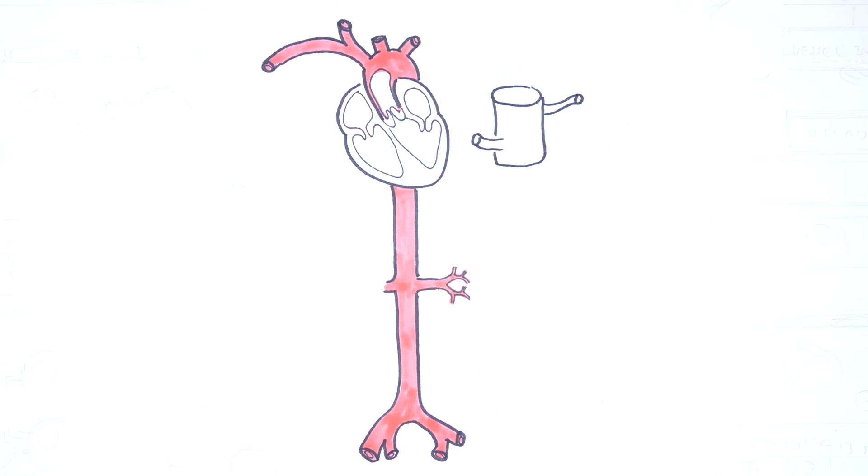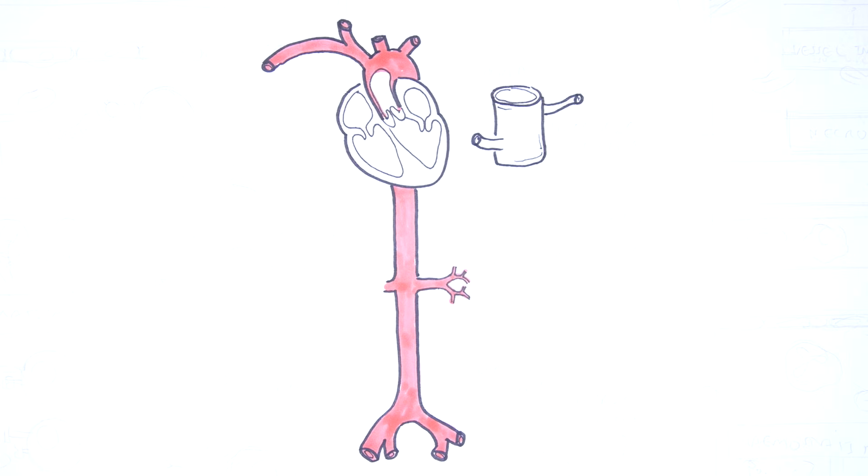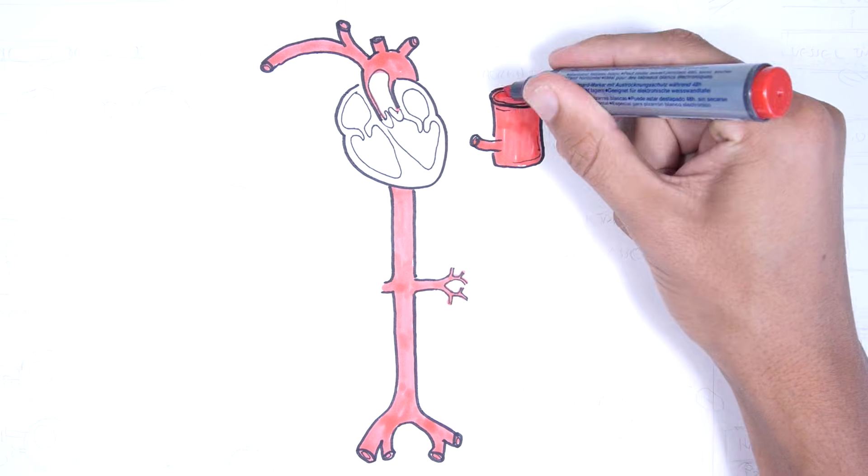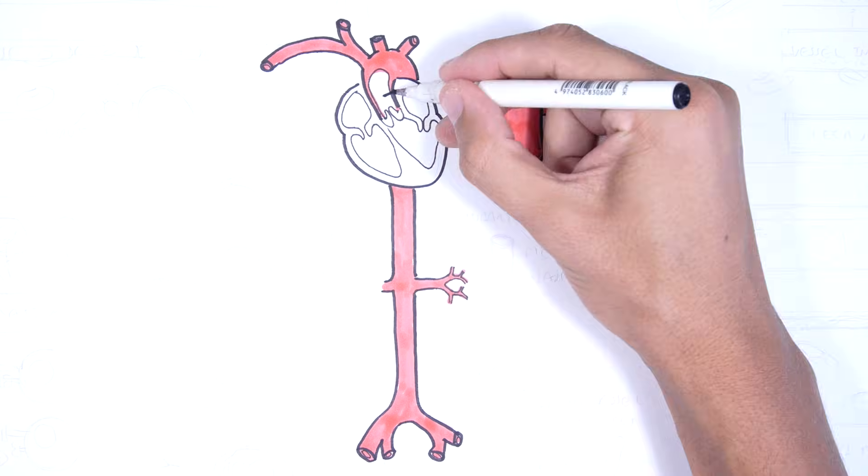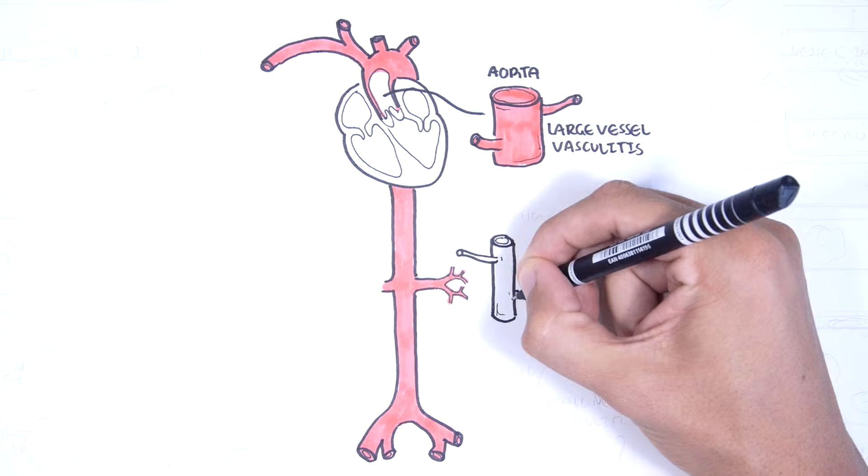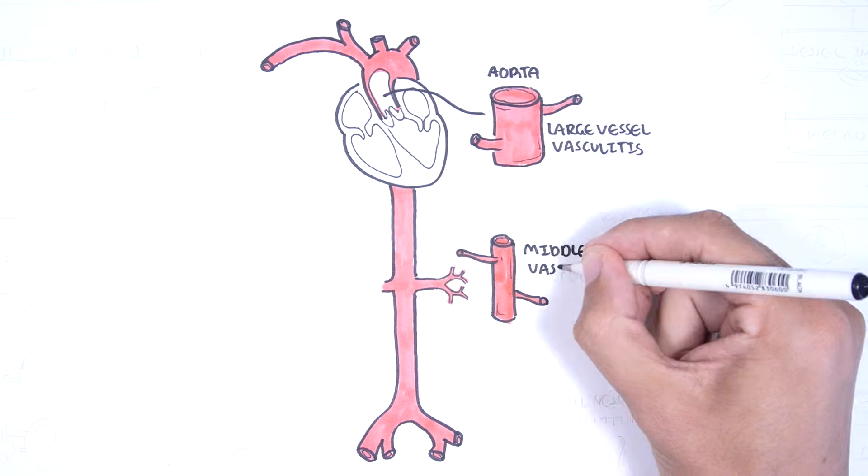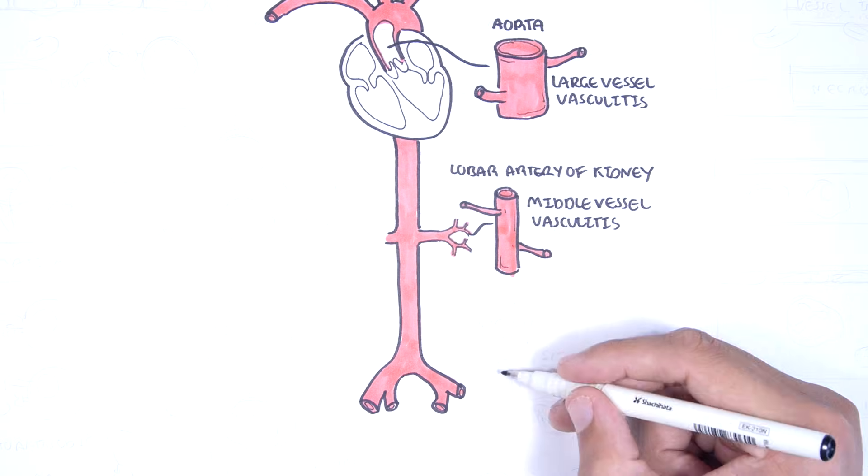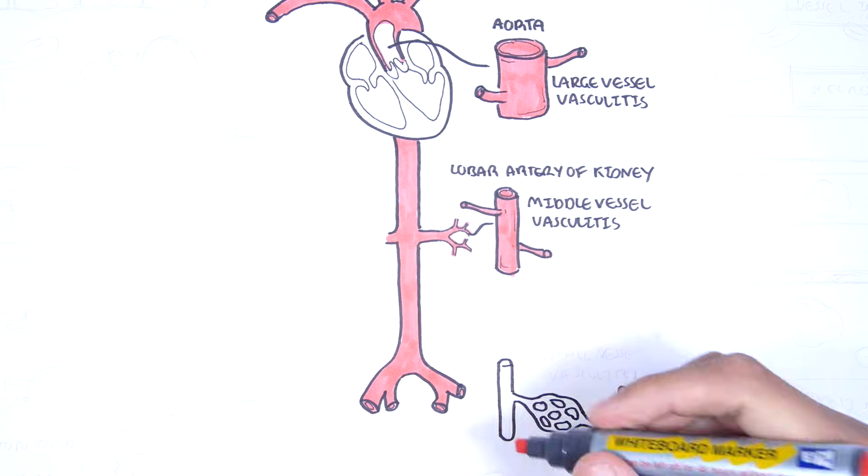Primary vasculitis are classified into the size of the blood vessels affected. There is large vessel vasculitis such as those diseases affecting the aorta and its main branches, medium vessel vasculitis such as those affecting the branches of the kidneys, and small vessel vasculitis which affect the arterioles and the capillaries.